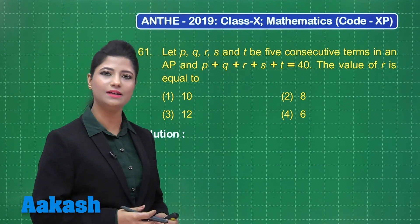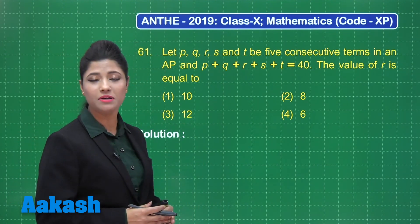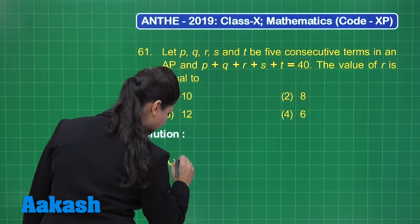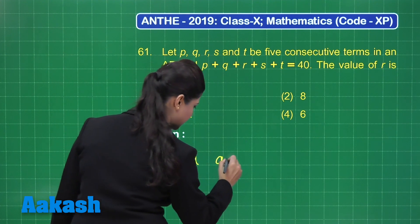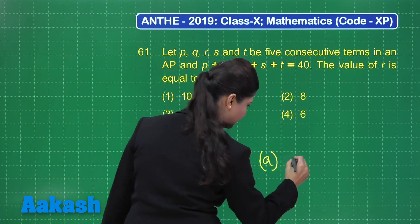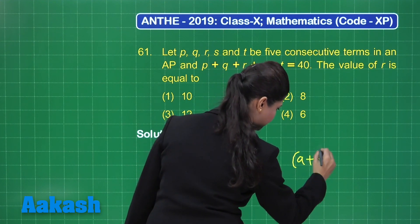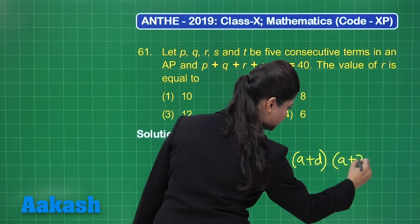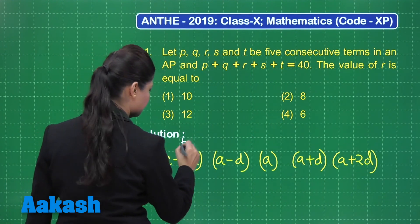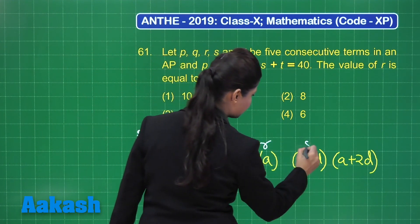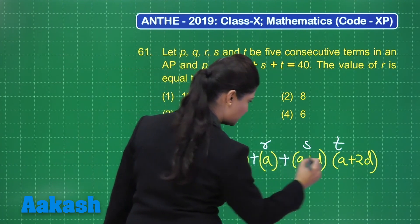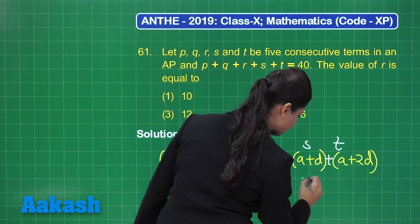When there are 5 terms in an AP, you can consider them as A minus 2D, A minus D, A, A plus D, and A plus 2D. This could be PQRST, and it has been provided that their sum total is equal to 40.